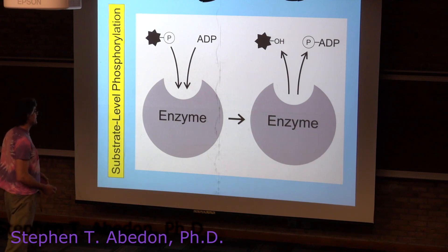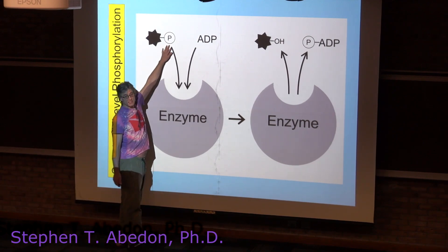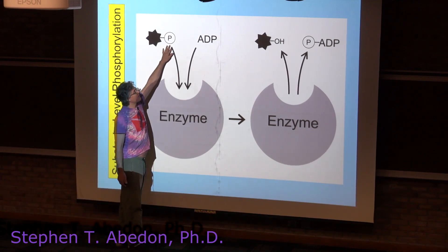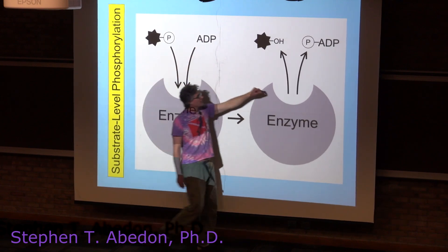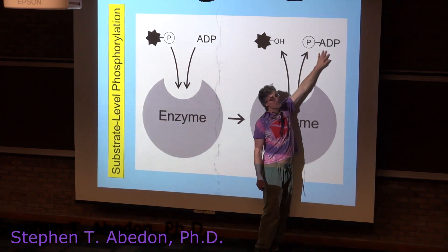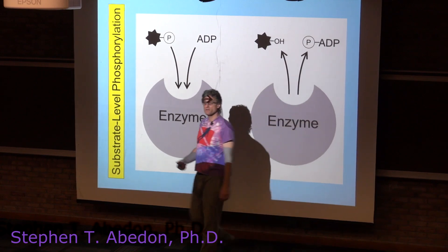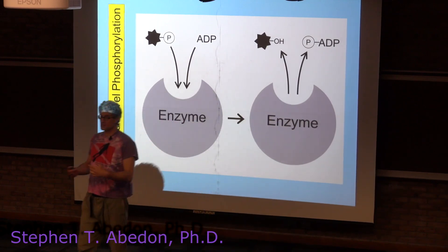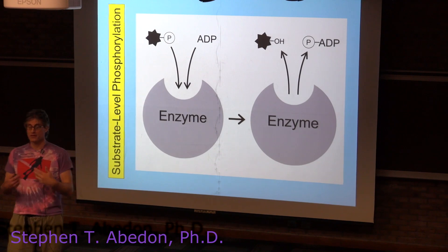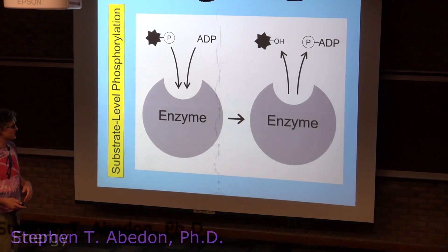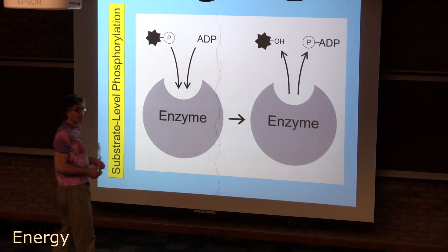You're simply taking a phosphorylated compound, and that phosphate on that compound is being added to ADP to make ATP. ATP is a representation of phosphorylated ADP — it's an adenosine diphosphate plus a phosphate, so adenosine triphosphate. That's substrate level phosphorylation.